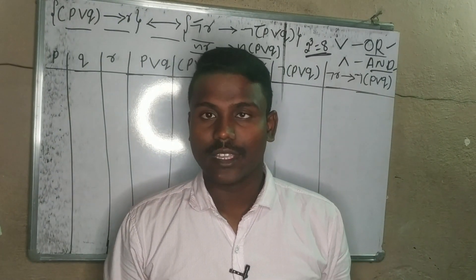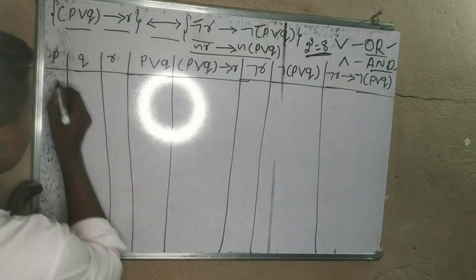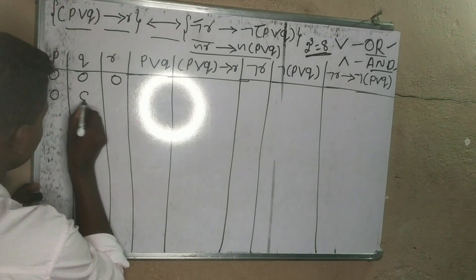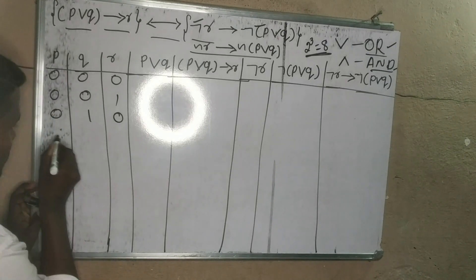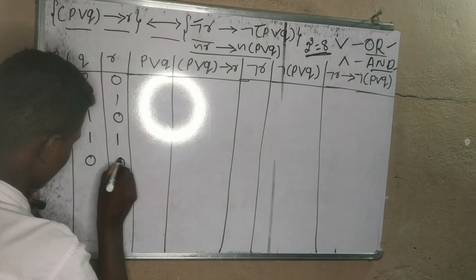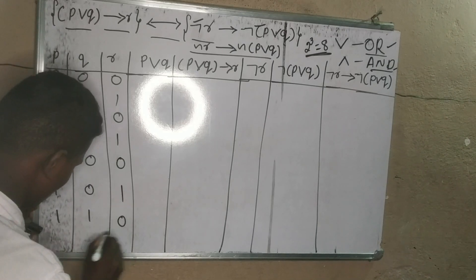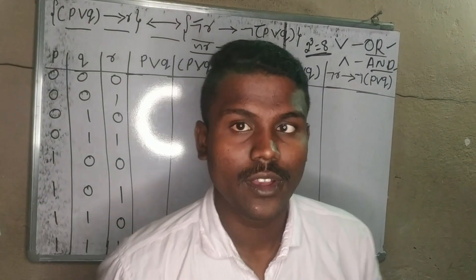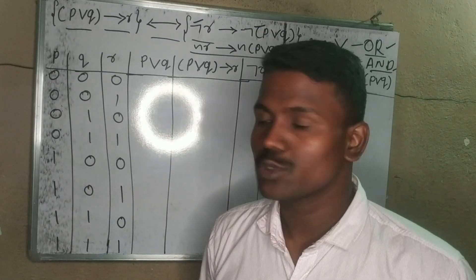We construct the truth table with 8 combinations. The 8 combinations are: 0 0 0, 0 0 1, 0 1 0, 0 1 1, 1 0 0, 1 0 1, 1 1 0, 1 1 1. This is how we construct the truth table.